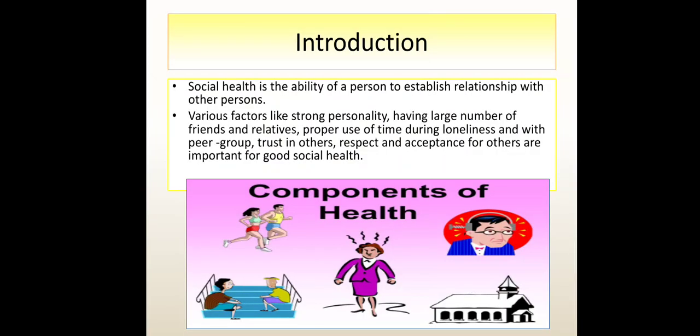Introduction: Social health is the ability of a person to establish relationships with other persons. Various factors like strong personality, having a large number of friends and relatives, proper use of time during loneliness and with peer group, trust in others, respect and acceptance for others are important for good social health.